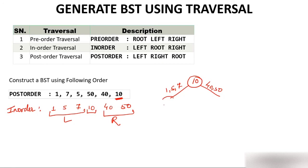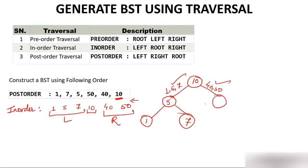Now for the left subtree with elements 1, 5, 7: since root comes from the right side in post-order, check which among 1, 5, 7 appears last - that's 5. So 5 takes this position. Since 1 is to the left of 5 in in-order, 1 comes here. And 7 is to the right of 5, so 7 comes here. This part of the tree is completed. For 40 and 50: check which comes last in post-order - 40 comes first, so 40 takes the position. And 50 is to the right of 40, so 50 comes to the right. This is the required BST.